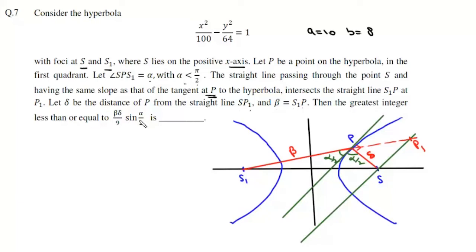Now what we will do is we will drop a perpendicular from s1 to this tangent, and say this distance is l. We know that the product of perpendiculars from two foci on any tangent is equal to b square. That means s1d times sp must equal b square, and b square in this case is 64.